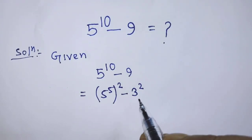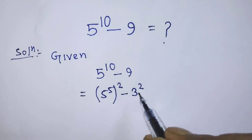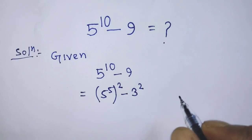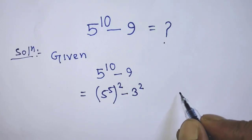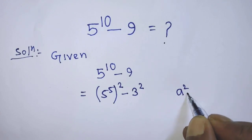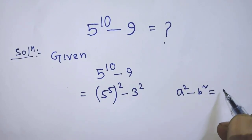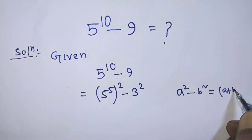To simplify this algebraic expression, we have to apply the formula a square minus b square is equal to a plus b times a minus b.